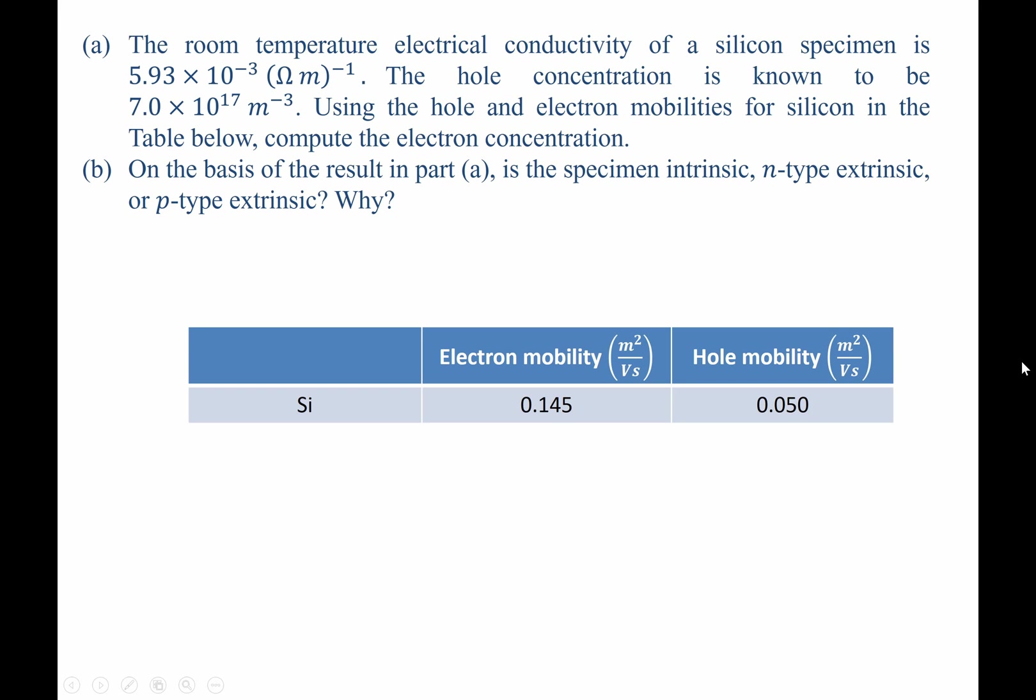The room temperature electrical conductivity of a silicon specimen is 5.93 × 10^-3 inverse ohmmeters. The hole concentration is known to be 7 × 10^17 inverse meters cubed. Using the hole and electron mobilities for silicon in the table below, compute the electron concentration.